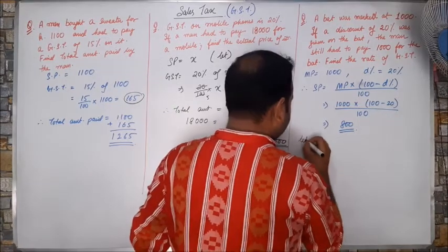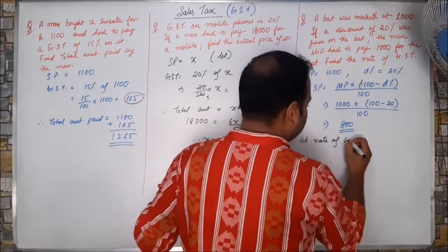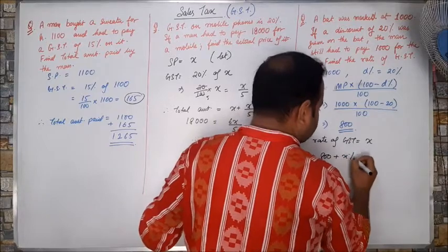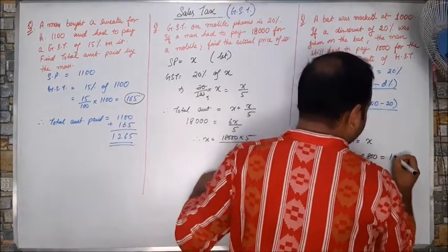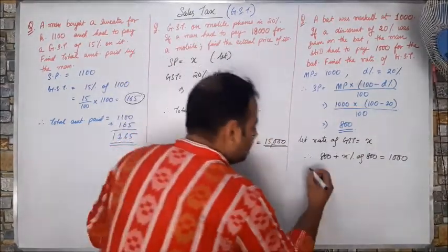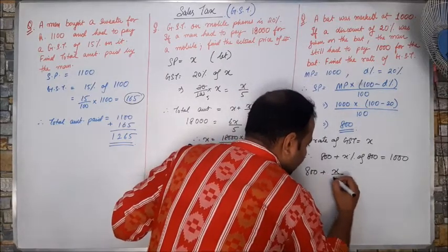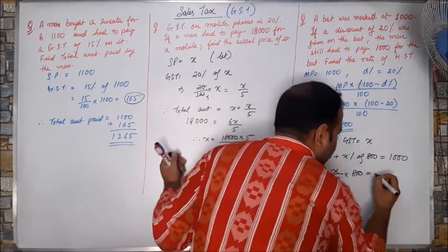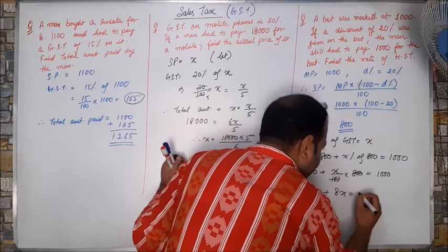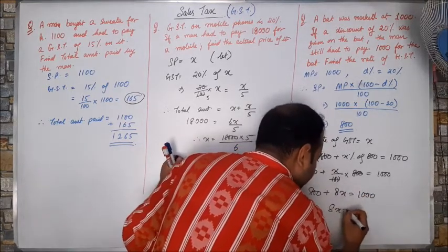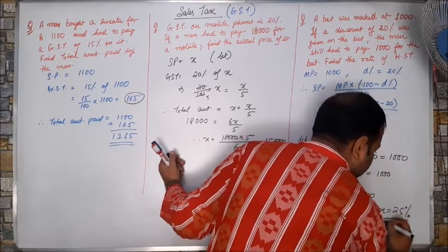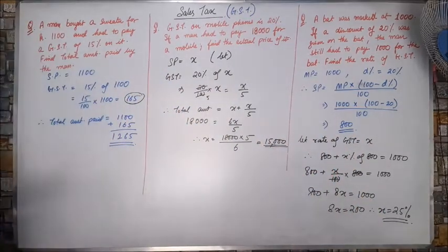Let rate of GST equals to X. So therefore, 800 plus X percent of 800 equals to 1000. Because the man has to pay total as 1000. 800 plus X by 100 into 800 equals to 1000. 800 plus 8X equals to 1000. 8X equals to 200. So therefore, X is equals to 25 percent. I have got the GST rate as 25 percent.